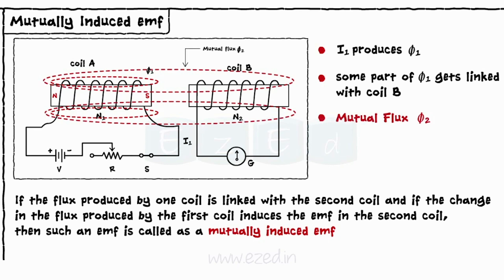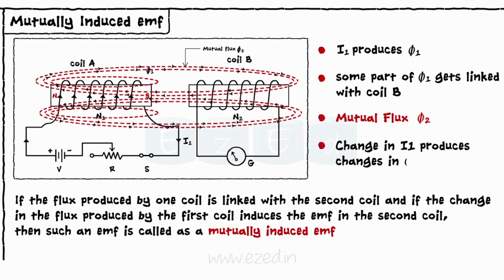Now if we change the magnitude of the current flowing through the coil A by variable resistance, the linked fluxes phi1 and phi2 also change.